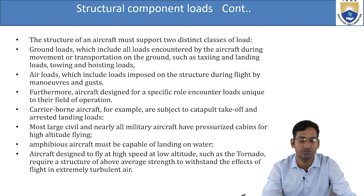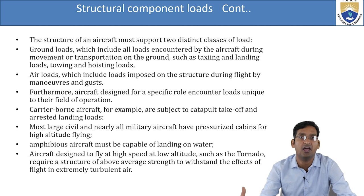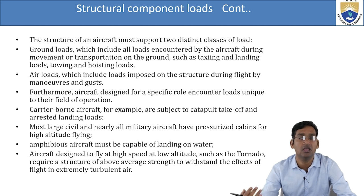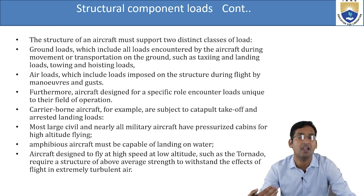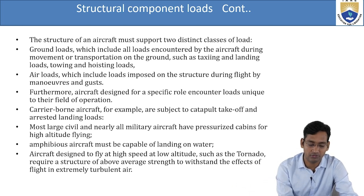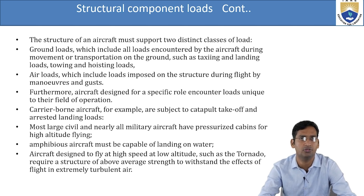Carrier-borne aircraft are subjected to catapult takeoff and arrested landing loads. On a naval ship, iron wire cables catch the landing gear to stop the aircraft, because a long runway is not available on the ship — otherwise the aircraft would go into the ocean. On carriers like INS Vikramaditya, arrested landing is required because fighter aircraft need a long runway.